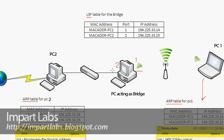In layer 3 bridging there are a couple of differences from layer 2. First of all, there is the promiscuous mode which some network interfaces do not support. For example, when you want to connect a wireless network to a wired network, since wireless networks do not support promiscuous mode, you have to automatically switch to layer 3 bridging. In Windows XP, when you do that, there's nothing you have to set or configure because it does that automatically — it will just simply switch to layer 3 bridging.